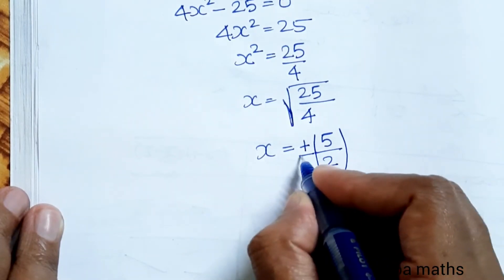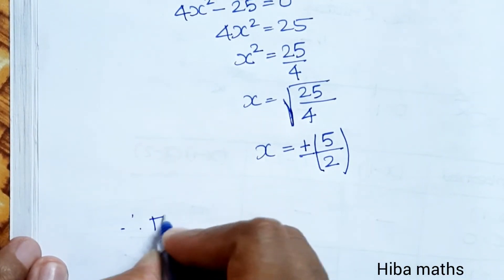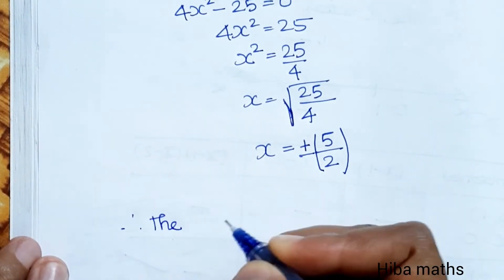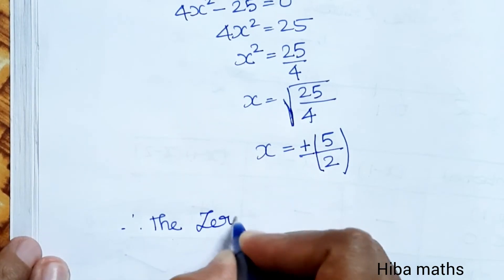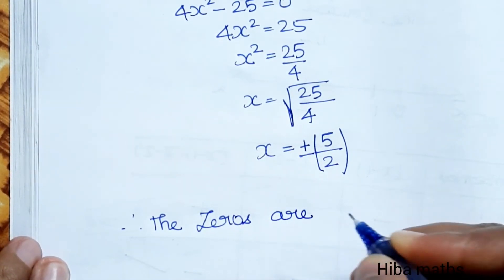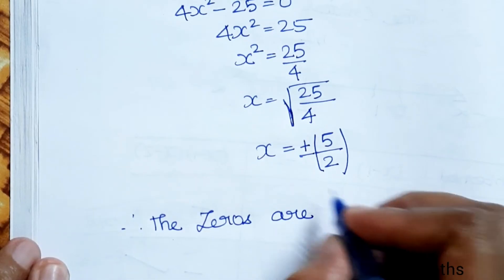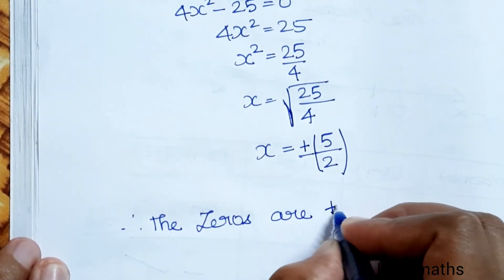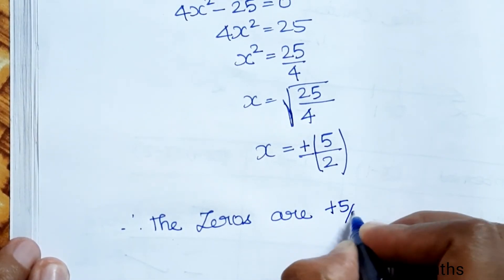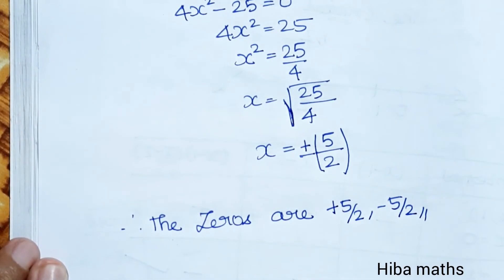So the zeros are plus 5 by 2 and minus 5 by 2. Thank you so much for watching.